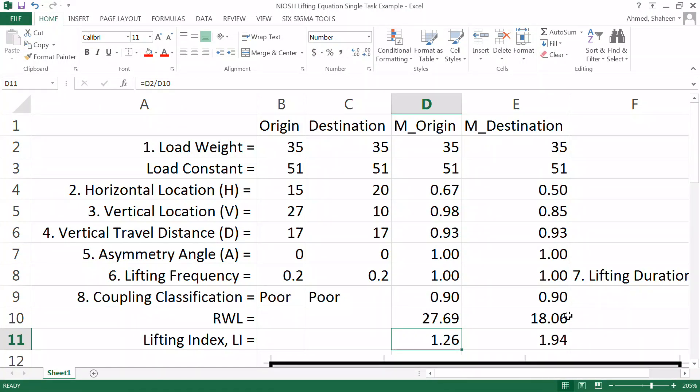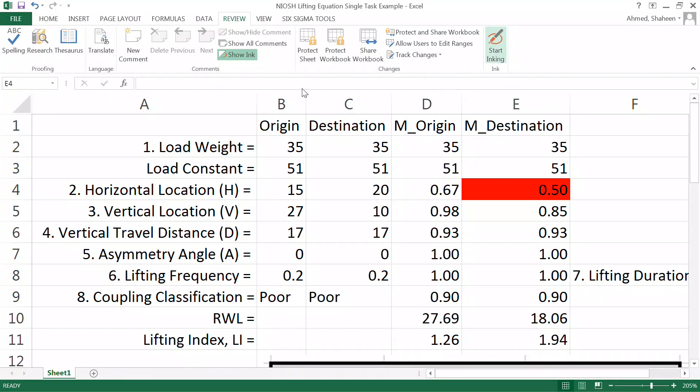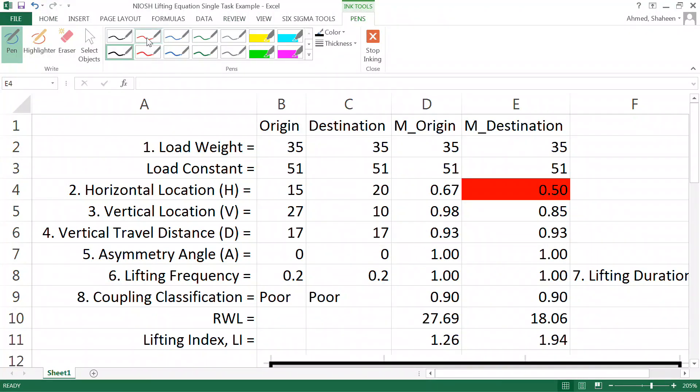However, at the destination, it's only 18 pounds. So if we have to fix anything, we have to fix the destination first. As you can see here, the lowest multiplier value is this one. 0.5 is basically lowering that load constant into half. The horizontal location at the destination is too far from the body. So if you can bring it down somehow, then it will be better.